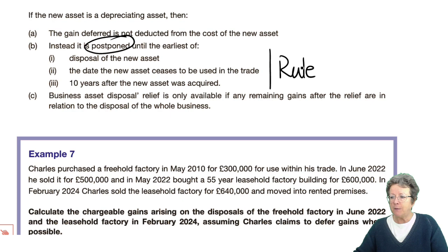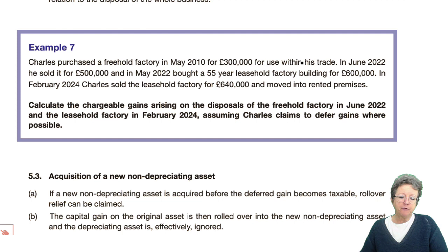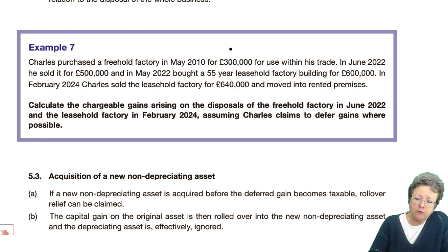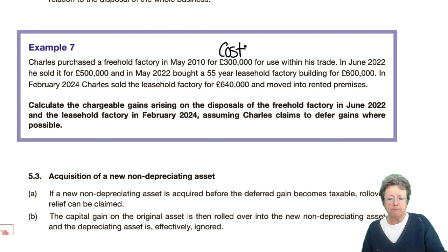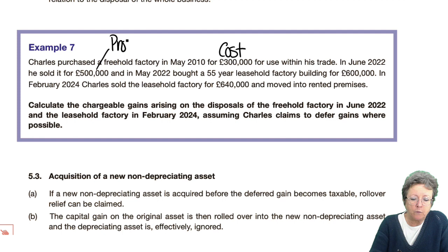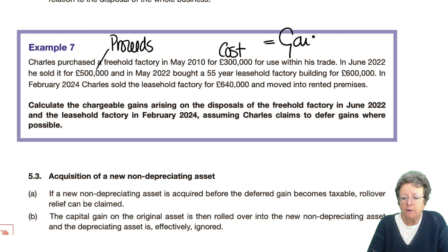Example number 7. Charles purchased a freehold factory in 2010 for £300,000 — that's our cost — and he used it in his trade. In June 2022 he sold it for £500,000 proceeds. Proceeds less cost equals a gain of £200,000.